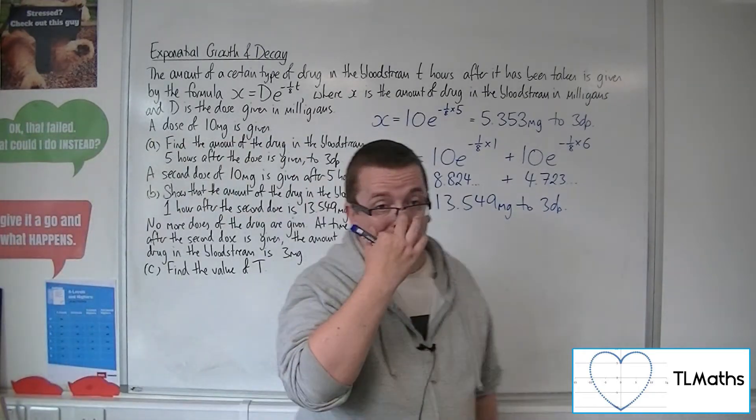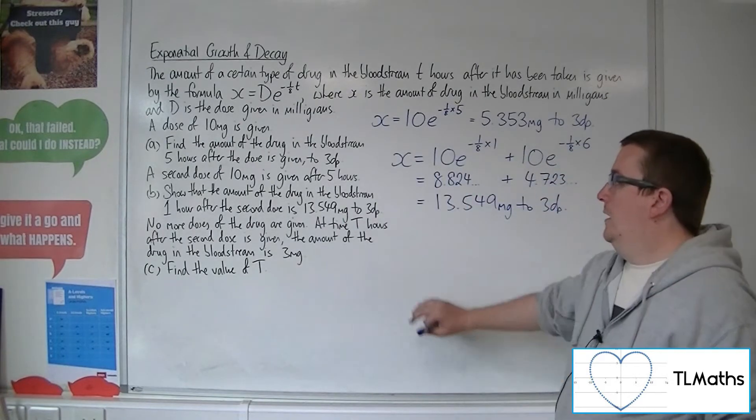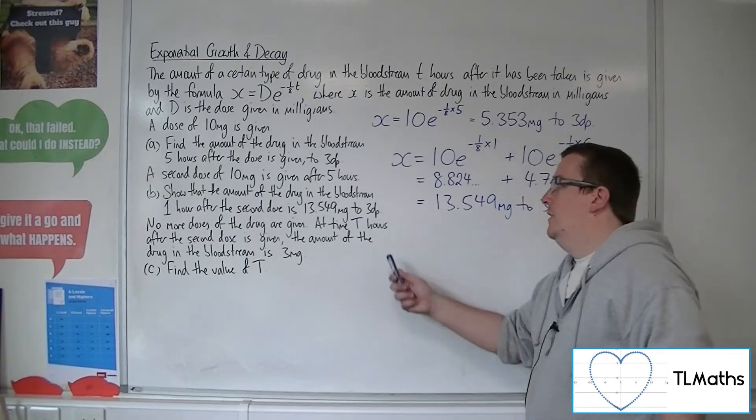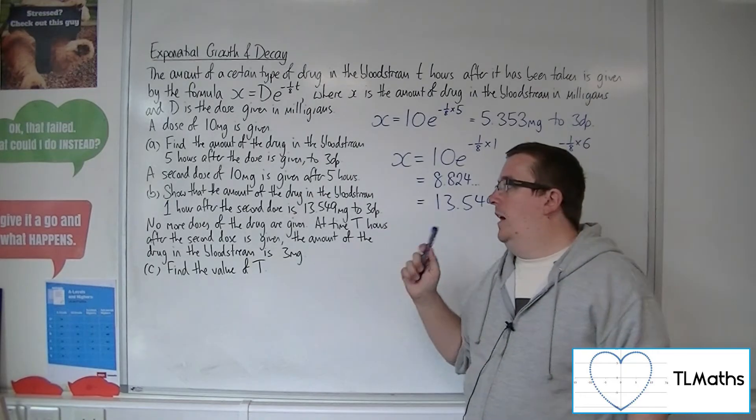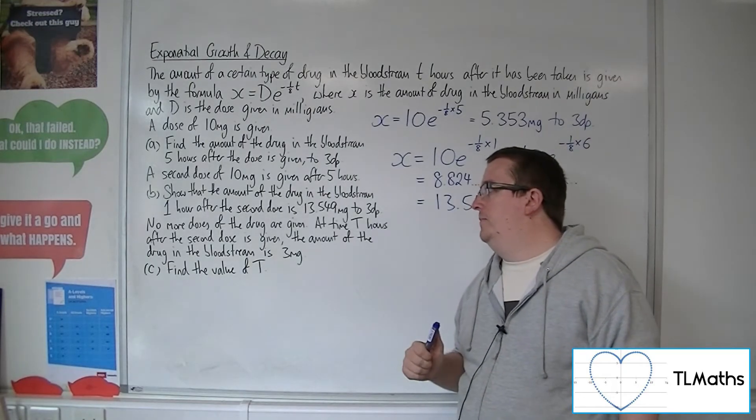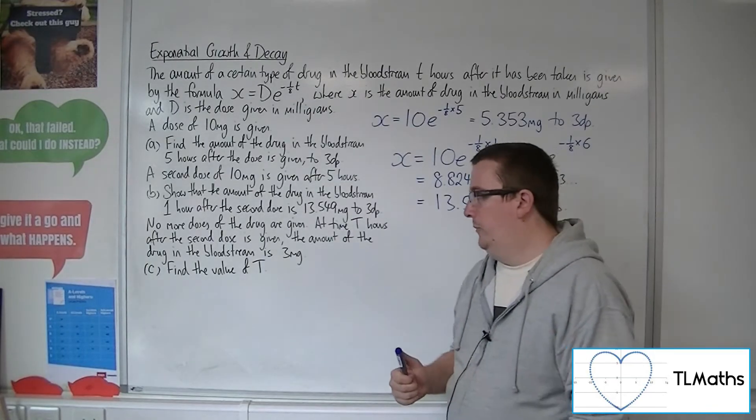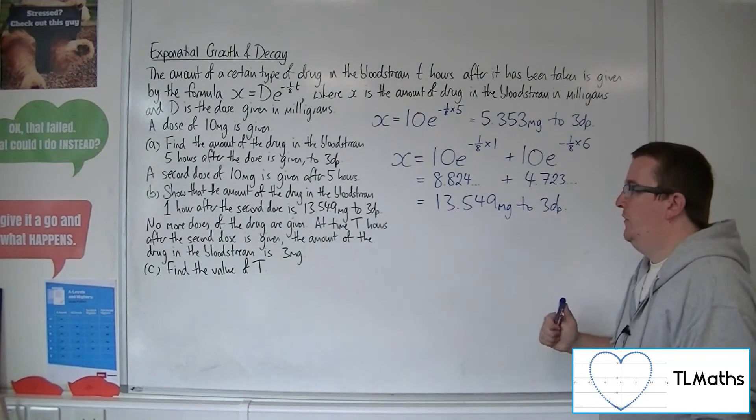Okay, so last bit. No more doses of the drug are given. At time capital T hours after the second dose is given, the amount of the drug in the bloodstream is three milligrams. Find the value of T.